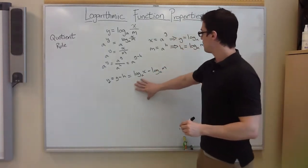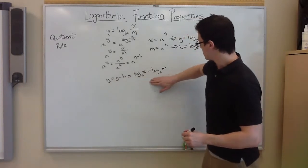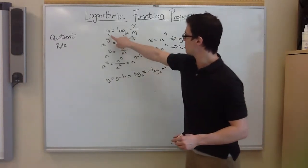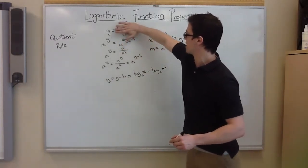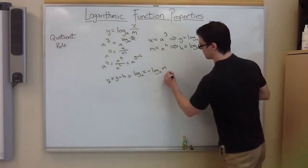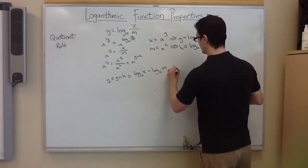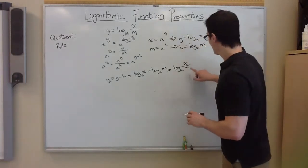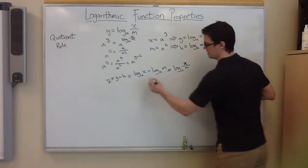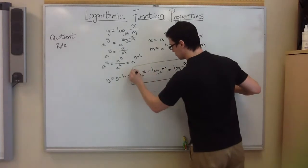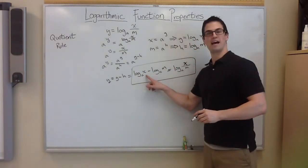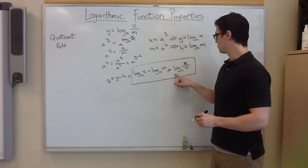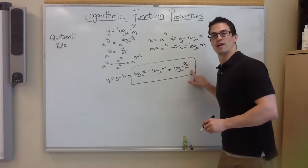Now to kind of put this into perspective, since y is equal to this big mess right here, y is also equal to this mess right here. So I'm going to take this and put it down here, substitute it in, log base a of x over m. x over m like this, and this is basically our quotient rule. Log base a of x minus log base a of m equals log base a of x over m.